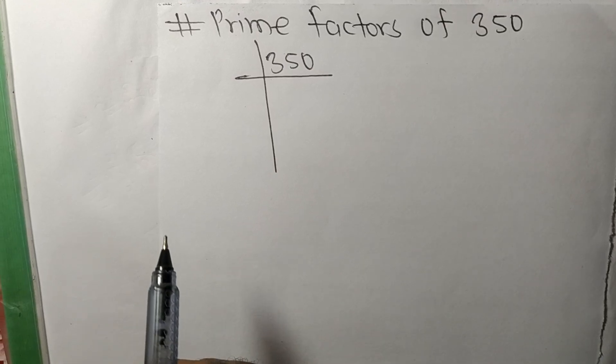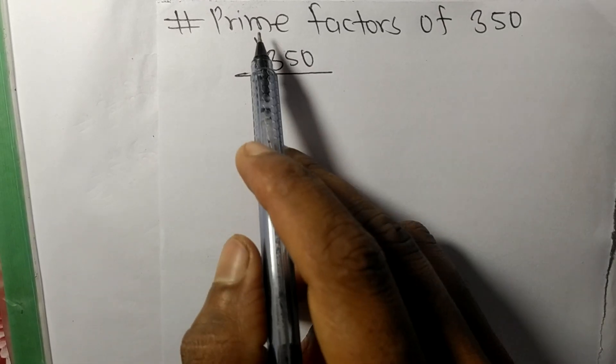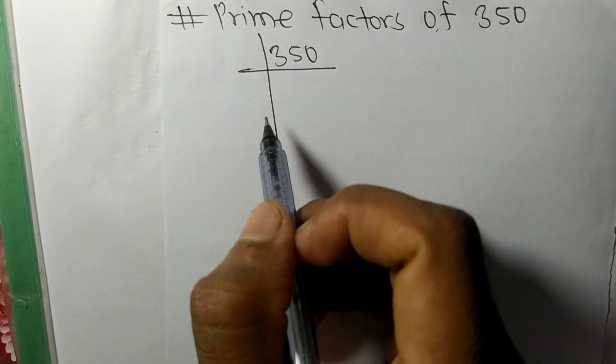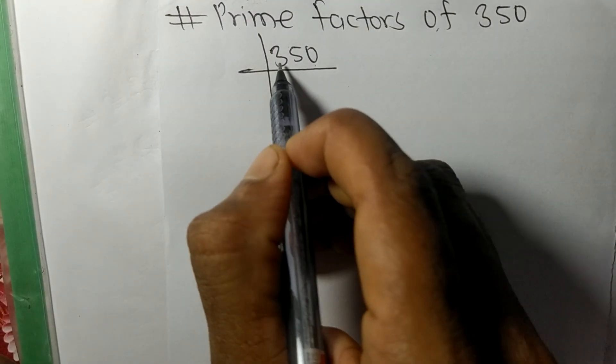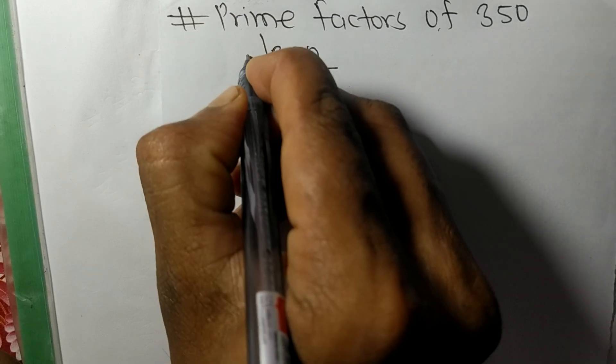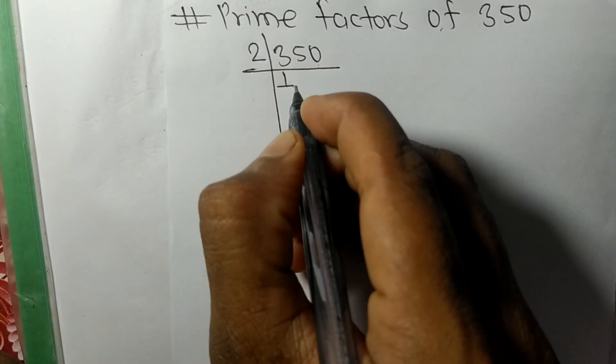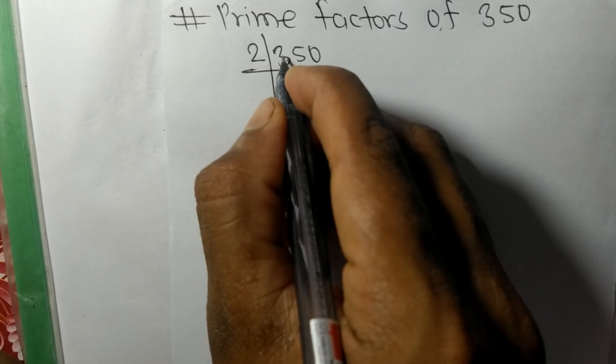So today in this video we shall learn to find the prime factors of 350. So at last it contains zero, so these whole numbers are divisible by 2. So 2 times 1 is 2 remainder 1, so 1, 5.